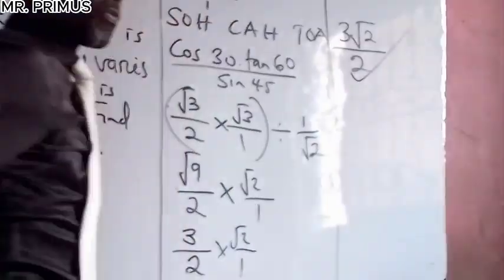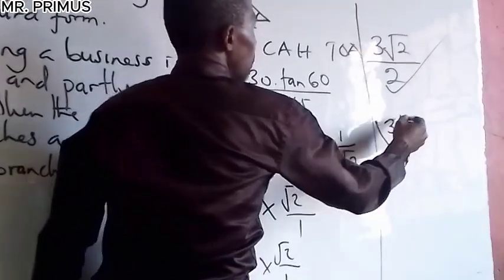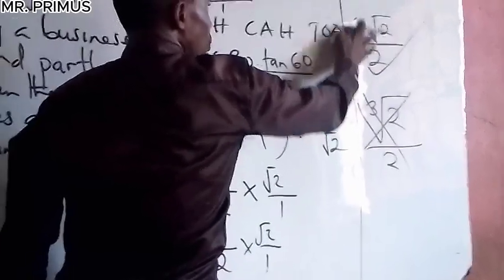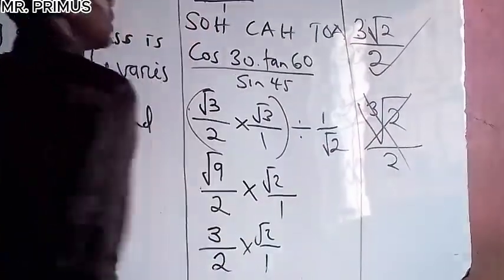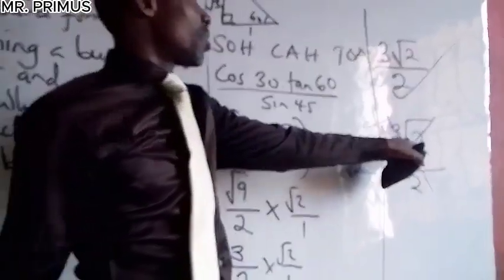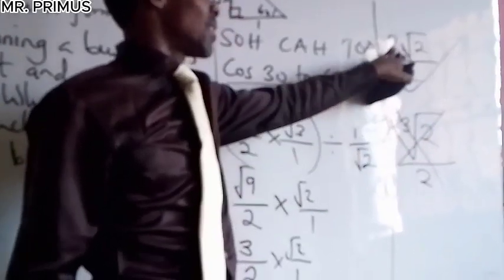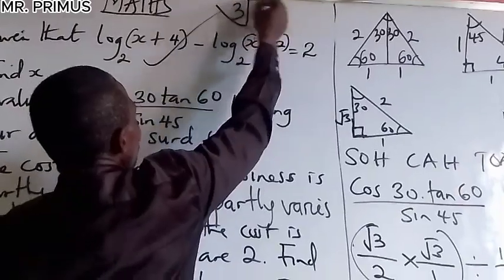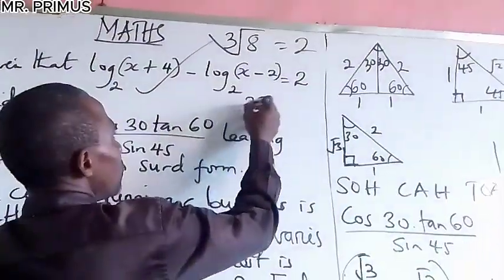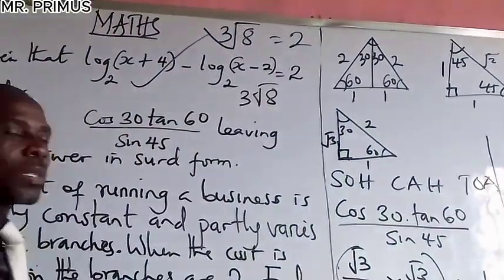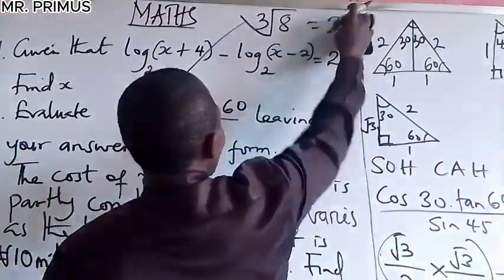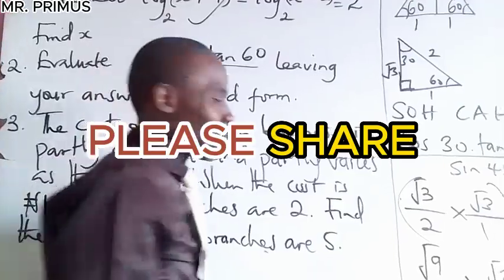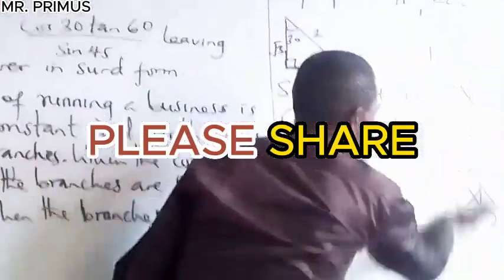The answer is 3√2/2. Be careful about notation: writing '3' inside the root symbol means cube root of 2, which is completely different. For example, the cube root of 8 is 2, not the same as 3 times √8. So always write 3√2 with the 3 outside the root. Now let's go to number three.